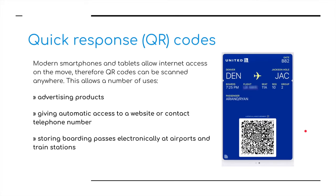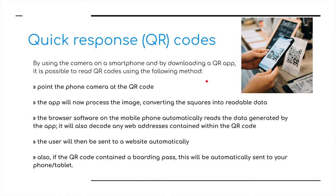Modern smartphones and tablets allow internet access on the move, so QR codes can be scanned anywhere. This allows for uses including advertising products, giving automatic access to a website or contact telephone number, storing boarding passes electronically on smartphones for use at airports, and for accessing train tickets. To use one: you point the phone camera at the QR code; the app processes the image, converting the squares into readable data; the browser software automatically reads the data; it decodes any web addresses and sends you to the website automatically. If the QR code contains a boarding pass, this is automatically sent to your phone or tablet.